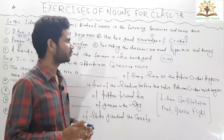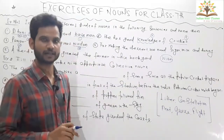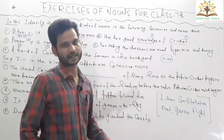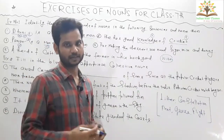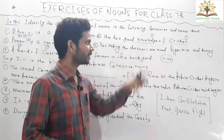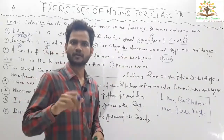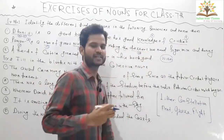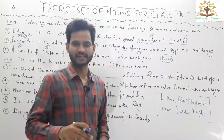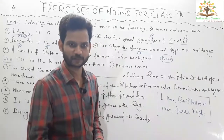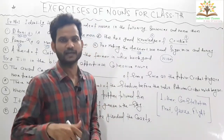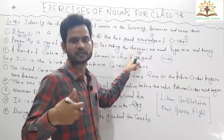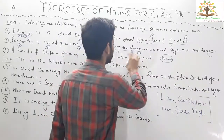Question number four: 'For making dessert, we need sugar, milk, and honey.' Here 'the' is an article. Keep one thing in mind — after an article, in most cases we get a noun. So here, dessert is a noun. Desert can be chocolate dessert, ice cream, and many more things served after dinner, so dessert is a common noun.